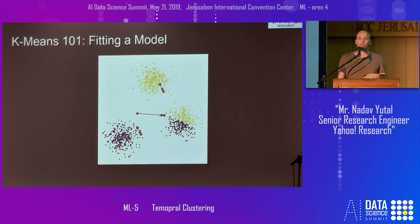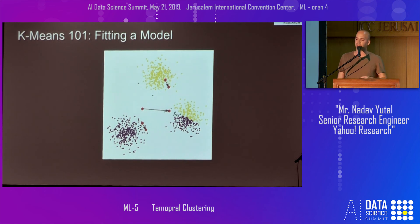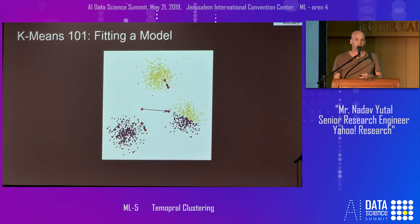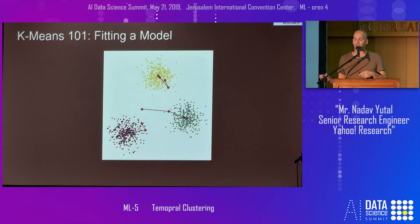The next step is to update the centroid to be at the center of the data it represents. For example, we take all the yellow points, average them, and find the new position of the centroid. By doing that, we actually minimize the sum of squared distances between the centroid and its objects. These two steps — the update and the assignment — we repeat until we converge, meaning no object wants to go to another cluster. In this example, it converges after two iterations.